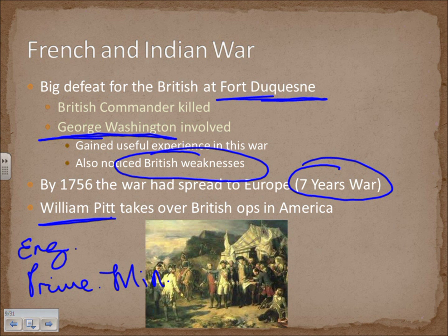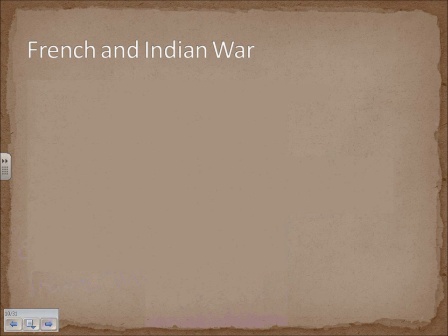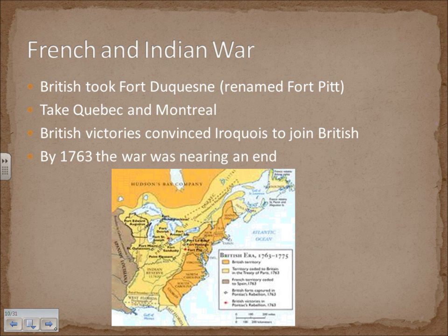The British retook Fort Duquesne and renamed it Fort Pitt, then moved to take Quebec and Montreal, essentially taking over Canada. British victories convinced the Iroquois — who had a massive confederation in the area — to ally with the British. By 1763 the war was nearing its end.